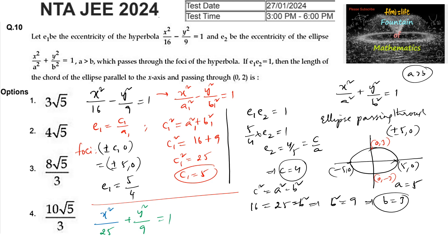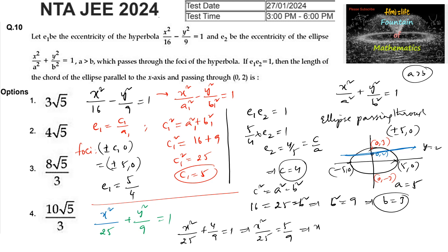The length of the chord drawn parallel to the x-axis and passing through the point (0, 2) is found by substituting y = 2 into the ellipse equation: x²/25 + 4/9 = 1, so x²/25 = 1 - 4/9 = 5/9.